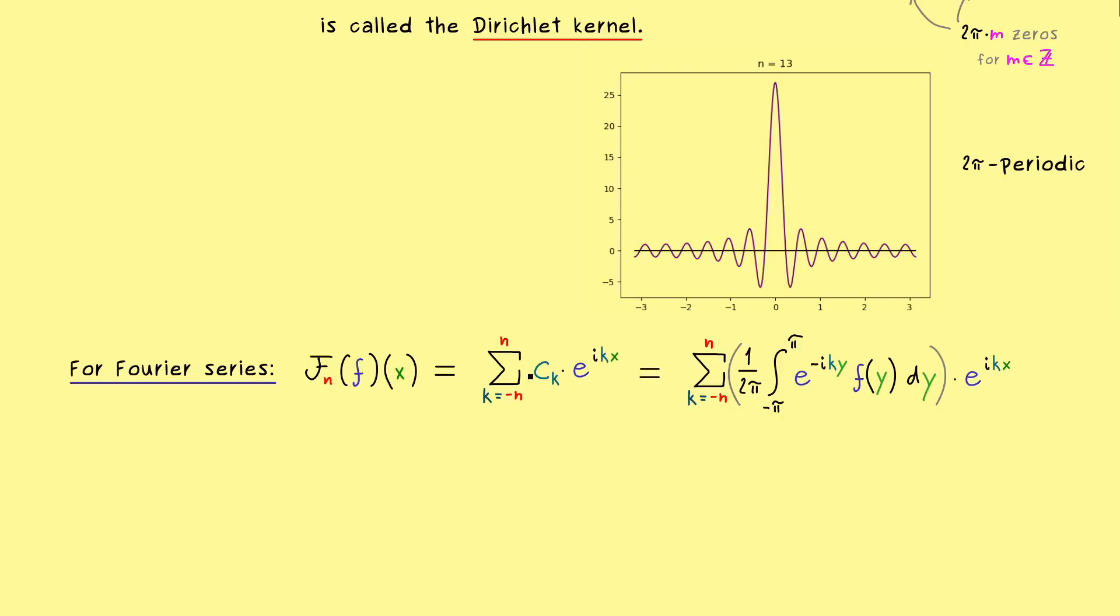Which means we still have to multiply with our exponential function at the end. And now since we have a finite sum, we can just pull it into the integration. So first we have our integral, then f of y, and then the whole sum of the exponential functions. However, there we can easily put them together by writing i k times (x minus y) in the exponent.